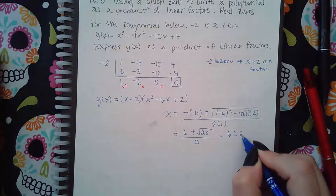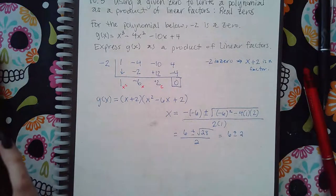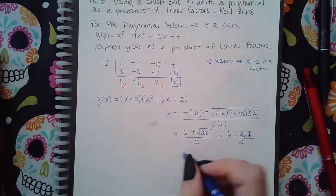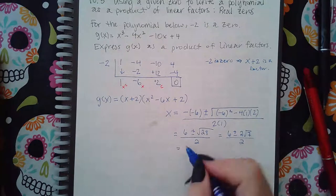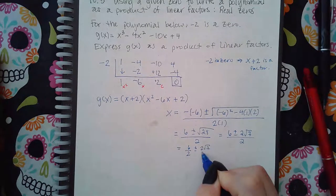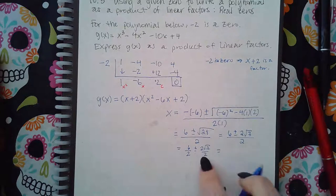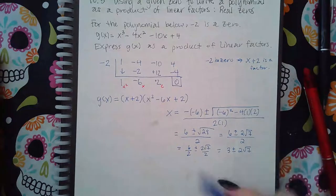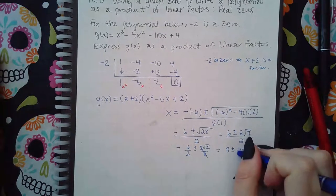Which gives me 6 plus or minus the square root of, let me see, how does that simplify? 2 square root of 7. And then I can split this. So 6 over 2 plus or minus 2 square root of 7 over 2, and then reduce each piece. I get 3 plus or minus square root of 7. I'm sorry, not 2, just square root of 7.